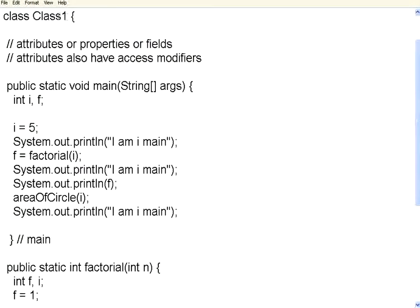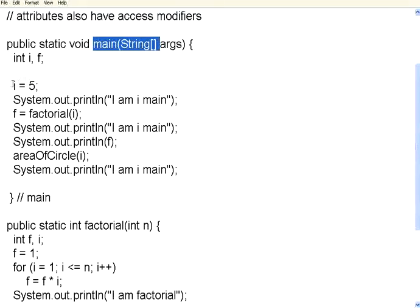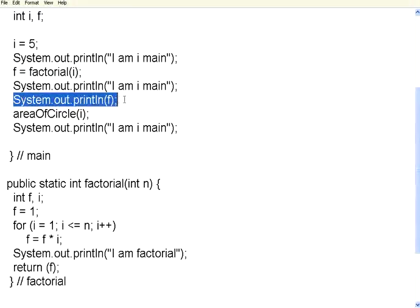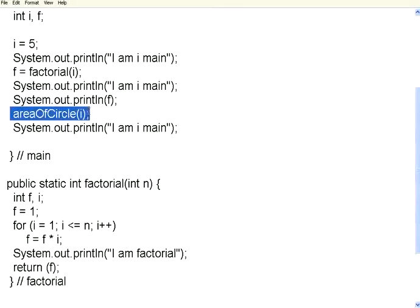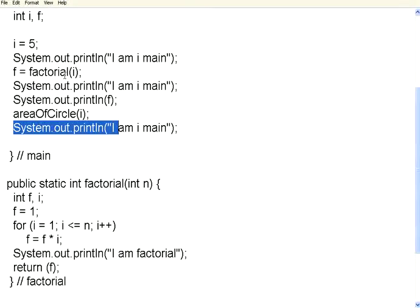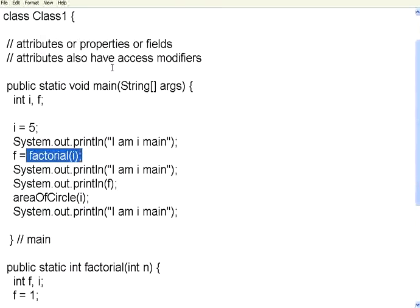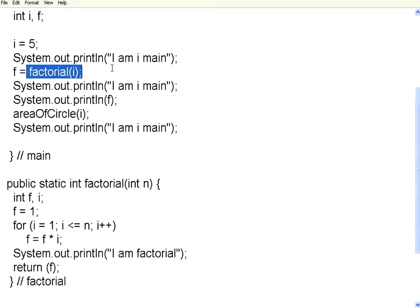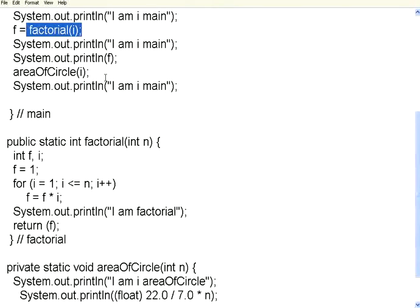If you see here, the class wraps around the methods. In the main method I have integers i and f. I print that I am in main, then I call factorial with variable i, which returns f. I come back to main and print the value of f. Then I call area of circle with parameter i. Calling methods within the same class is no different from calling in C or any other programming language — just call with parameters; if it returns a value, you have a left-hand side variable.